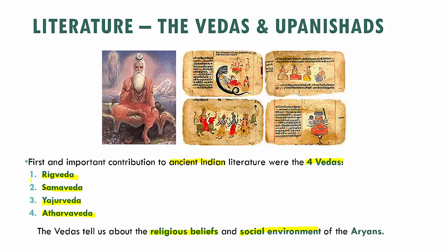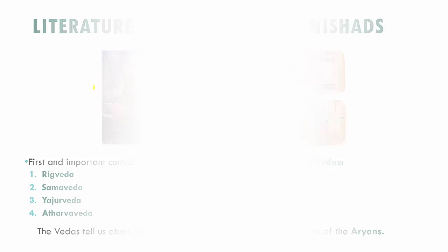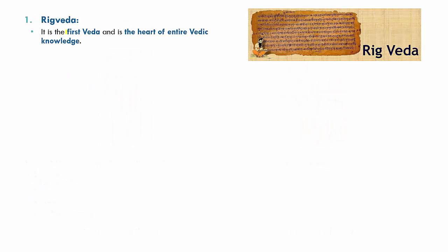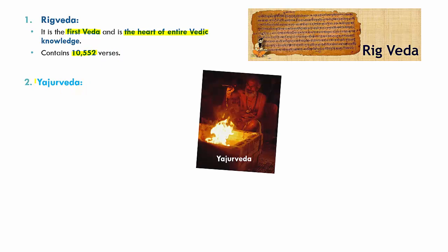Looking at the Rigveda first, it is the first Veda and the heart of the entire Vedic knowledge, containing about 10,552 verses. Then we have the Yajurveda, which is composed of hymns for sacrifices and offerings, and contains about 2,000 verses.